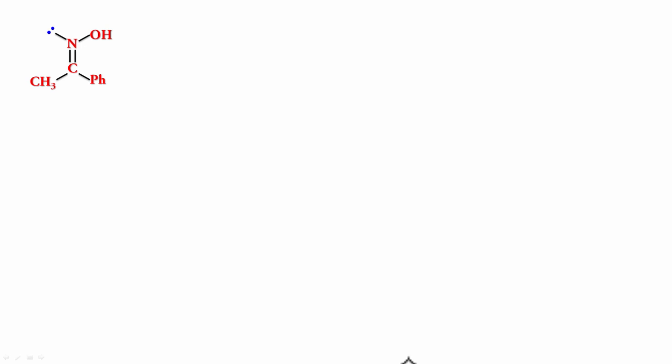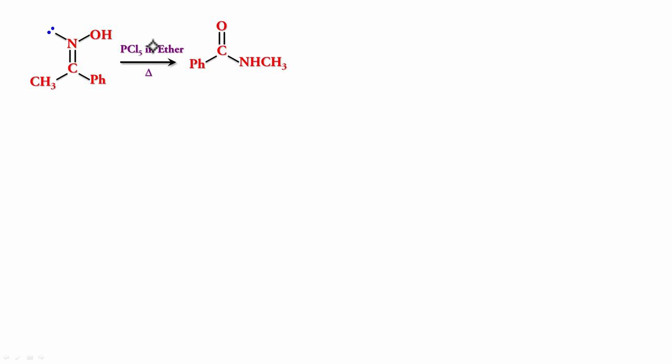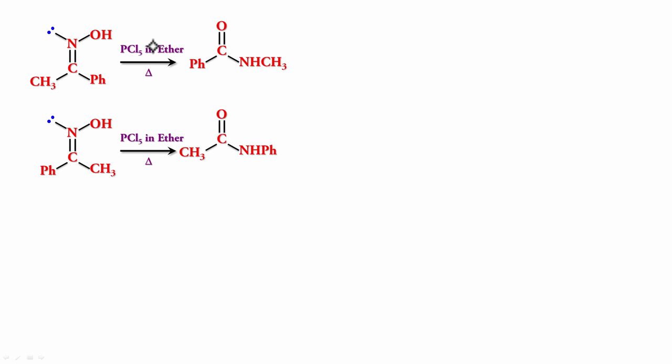Let's do a couple of examples. Out of Ph and CH3, Ph has the higher migrating aptitude than CH3. Let's check which one is actually moving. As you notice, it is CH3 that moves because that is the one opposite to OH. So it's not based on migrating aptitude. If I switch and take a different isomer, the product is different.